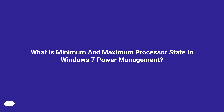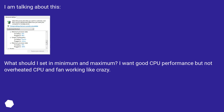What is minimum and maximum processor state in Windows 7 power management? I am talking about this. What should I set in minimum and maximum? I want good CPU performance but not an overheated CPU and fan working like crazy.